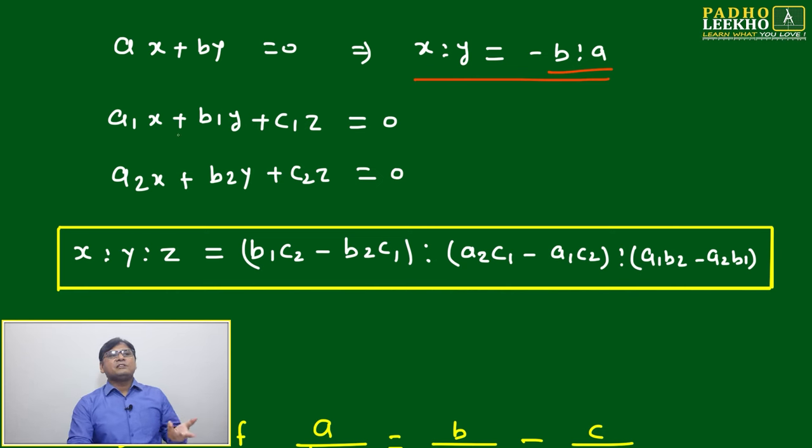In terms of three variables: a₁x plus b₁y plus c₁z equals 0, and a₂x plus b₂y plus c₂z equals 0. Then what will be the ratio between x, y, and z?